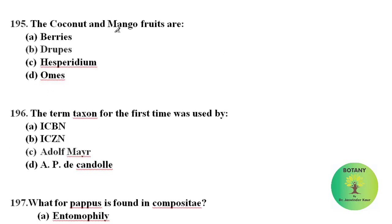Coconut and mango fruits are examples of drupes. A drupe is a fleshy fruit with a thin skin and a central stony part containing the seed.